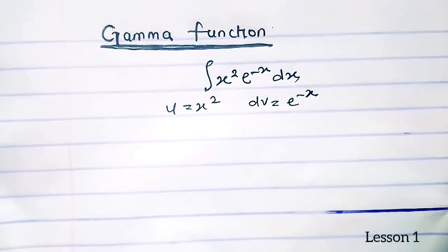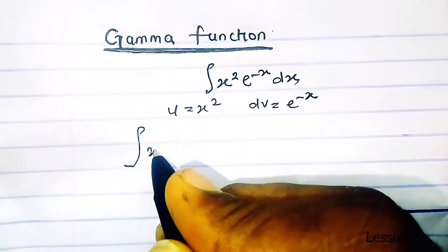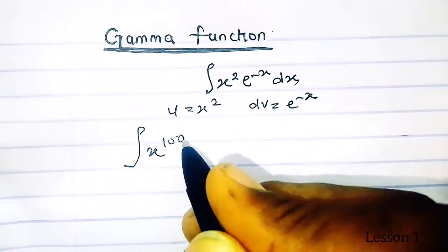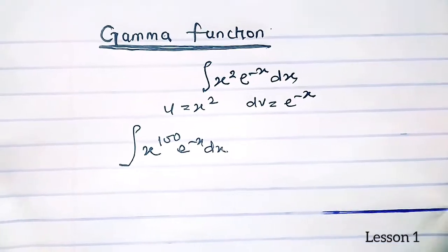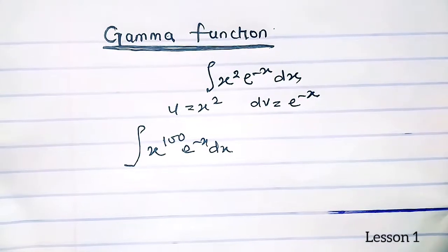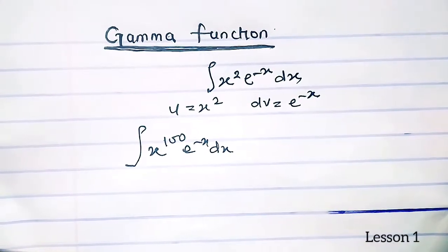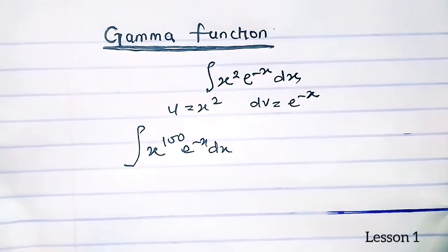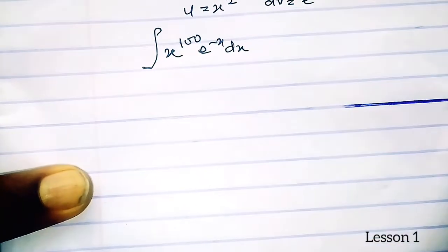But when we are asked to integrate x raised to the power 100 times e to the minus x, it becomes very difficult and cumbersome to solve using integration by parts. That is where we employ the gamma function.